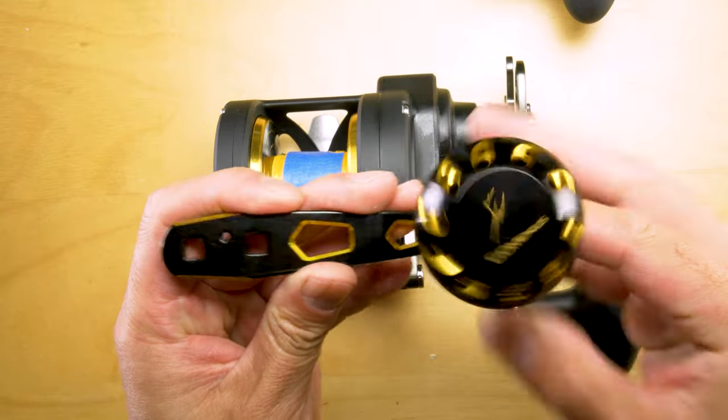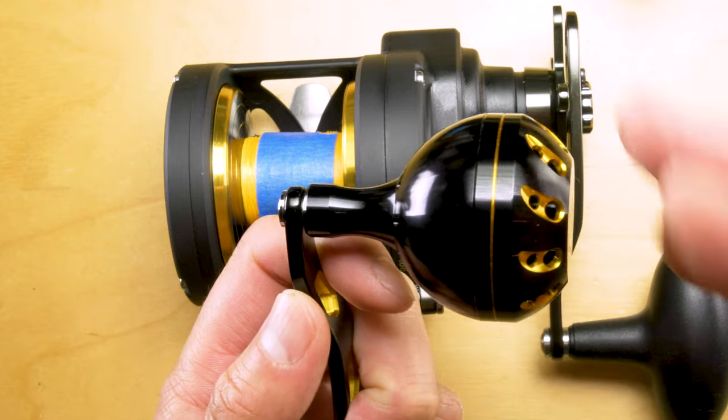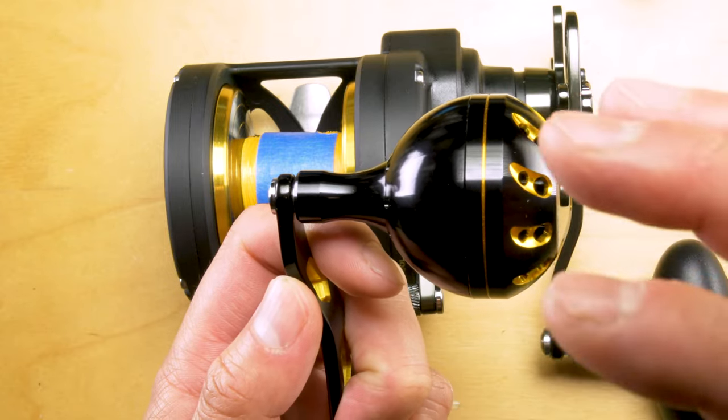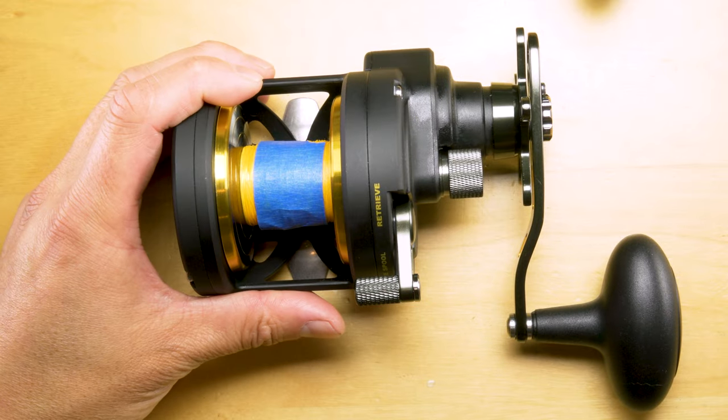It's a Gomexis brand ball knob. This is very similar to what I would be using if I was using a low profile, something like a Daiwa Lexa or a Tranx, and I just want to bring it onto this because I'm going to be using this for surface iron.